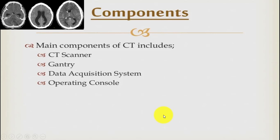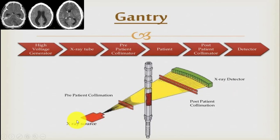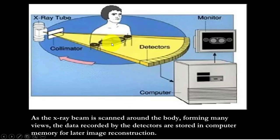In the CT scan system, high voltage generates x-rays which then pass through the x-ray tube, then pre-patient collimation, then patient scanning, then post-patient collimation, and ultimately reach the detectors. Here is a visual animation of the CT scan showing the x-ray tube, collimator, and patient. Multiple detectors collect the data, which is processed in the CPU and displayed on a monitor.